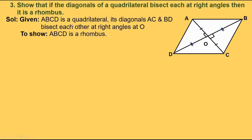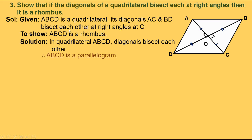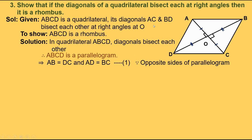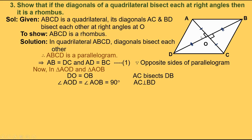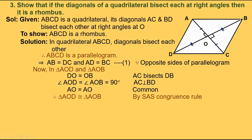So the solution: in quadrilateral ABCD, diagonals bisect each other. Therefore, ABCD is a parallelogram. In a parallelogram, opposite sides are equal. This implies AB equals DC and BC equals AD — take it as equation 1. Now in triangle AOD and triangle AOB: AO equals BO (diagonals bisect each other), angle AOD equals angle AOB equals 90 degrees since AC is perpendicular to BD, and AO equals AO which is common. Therefore, triangle AOD is congruent to triangle AOB by SAS congruence rule. This implies AD equals AB by CPCT.